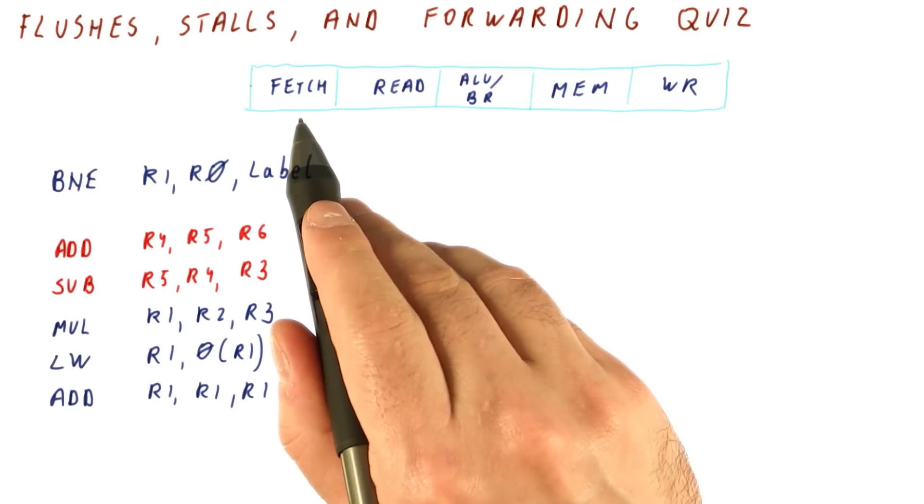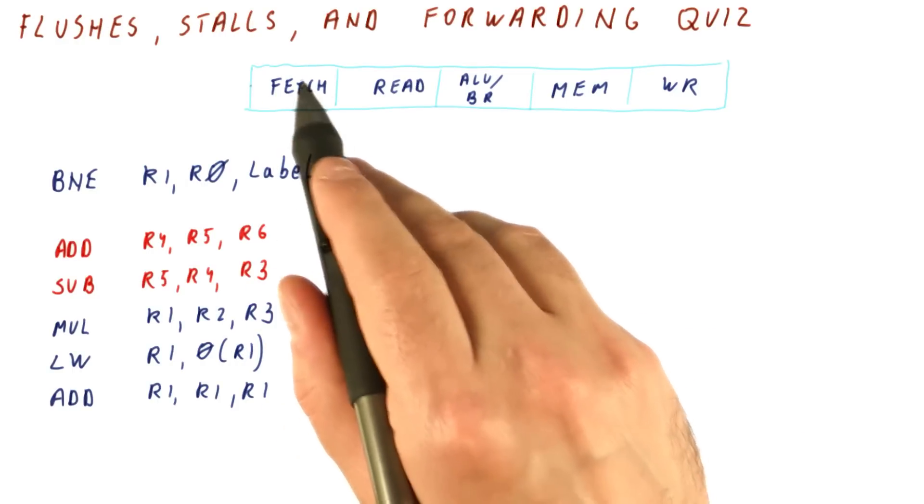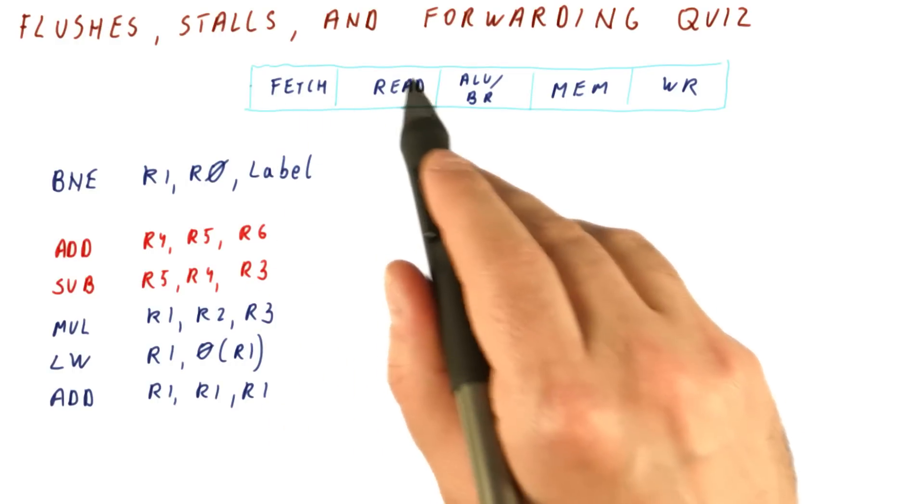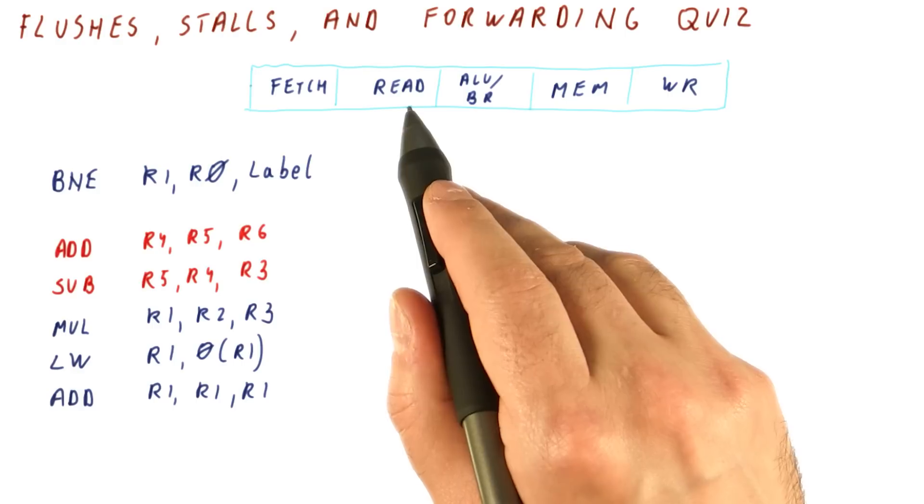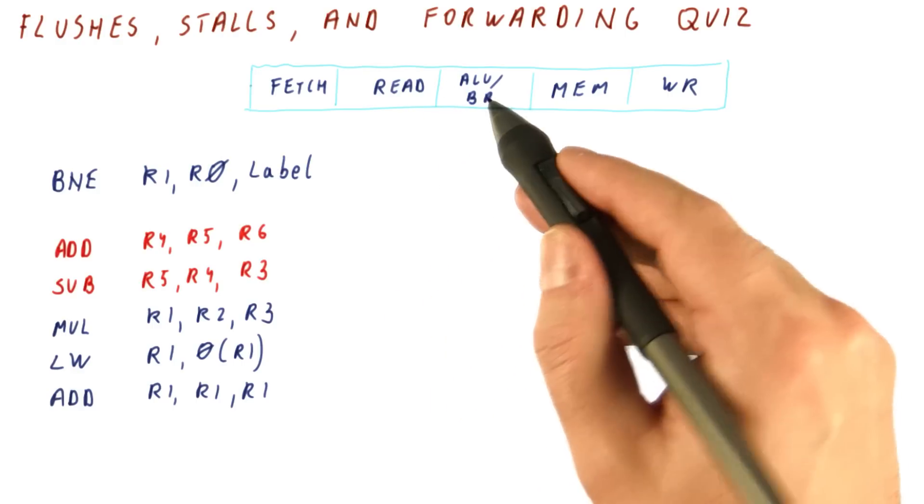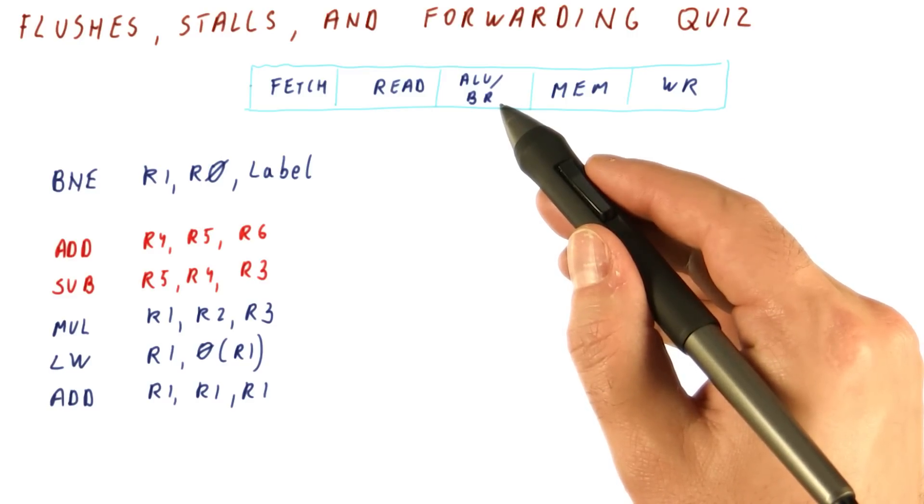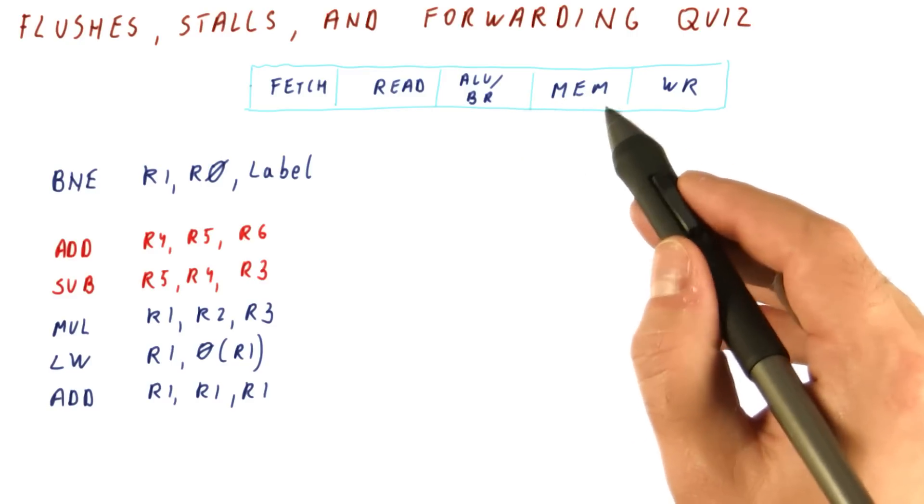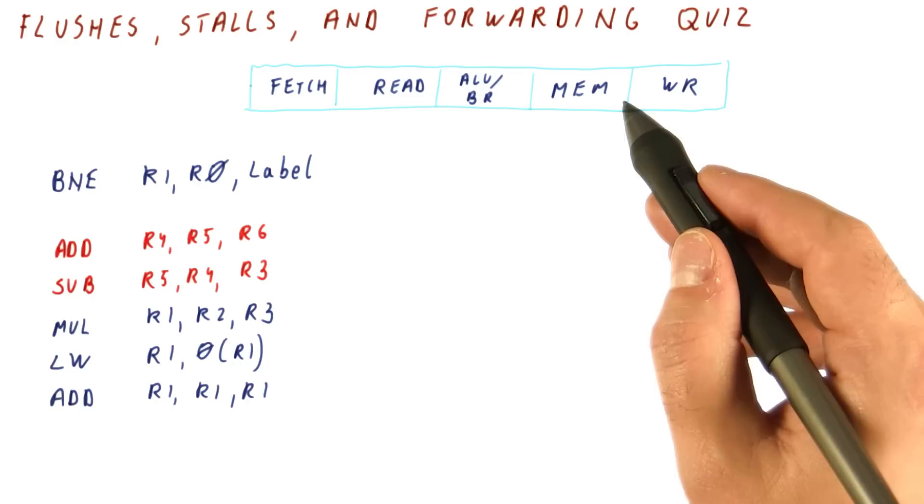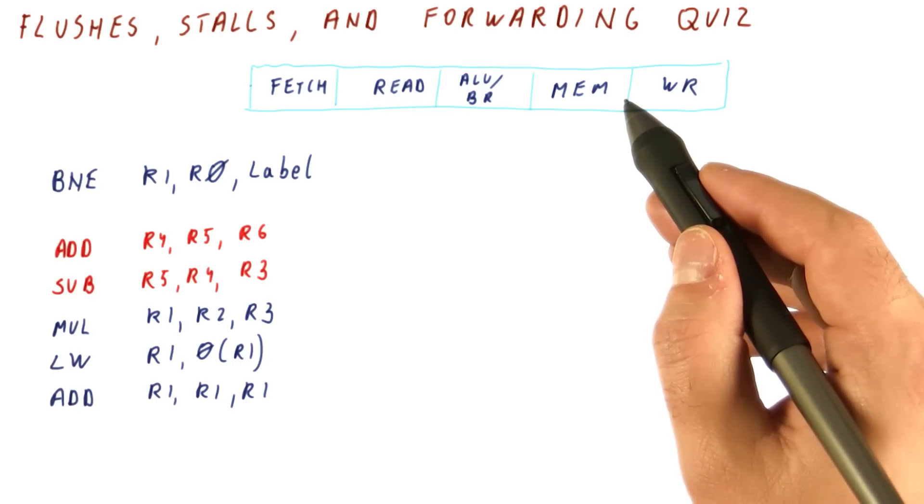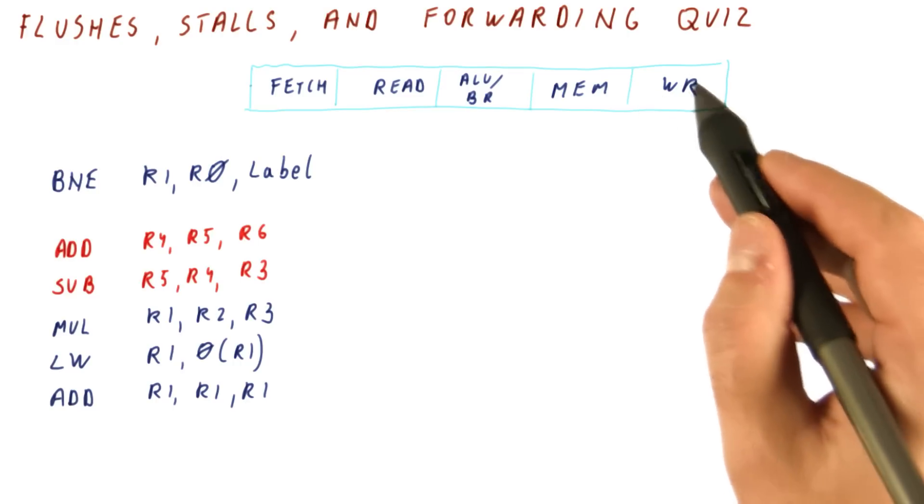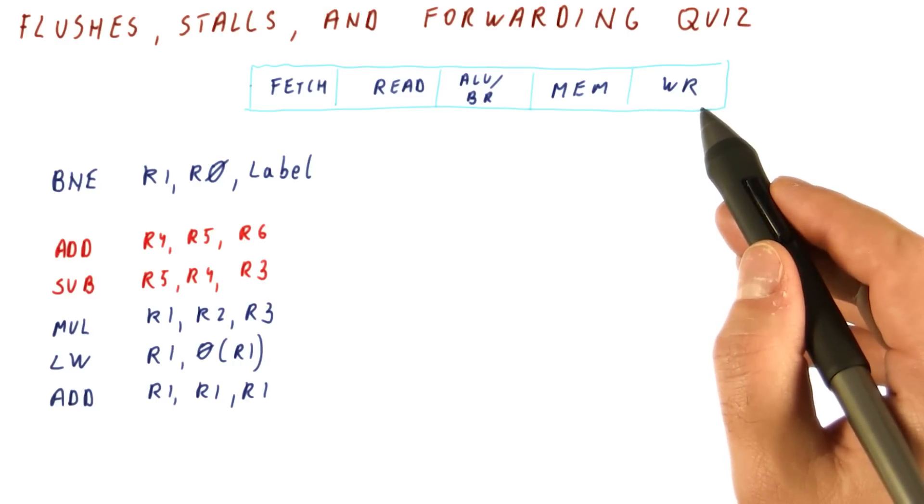Let us say that we have a five stage pipeline where the first stage fetches the instruction, the second stage decodes the instruction and reads the registers. The third stage, the instruction does the ALU operation, and a branch is resolved so we know where it's going. In the MEM stage, loads and stores access memory. So at the end of this stage, a load will finally have a value. And finally, the fifth stage writes the result to the register.